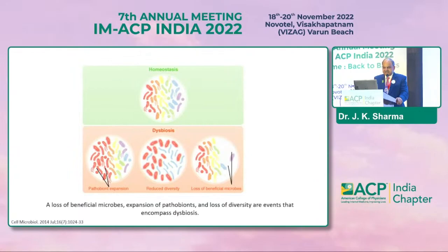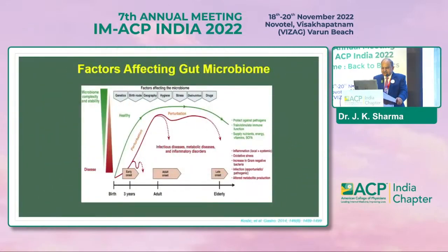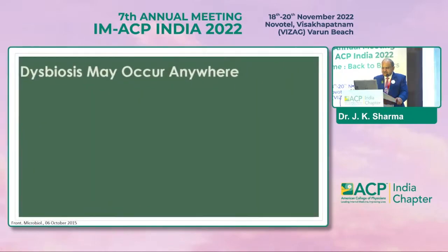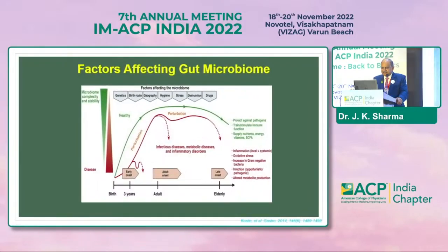The various factors that affect the gut microbiota start even before birth or at the time of birth, with early onset at 3 years, then adult onset, then late onset. Factors include genetics, birth route, geography, hygiene, stress, diet and nutrition, and drugs — all of these affect the microbiome.